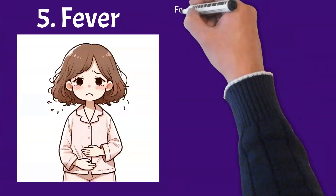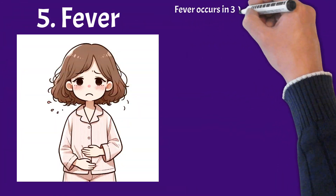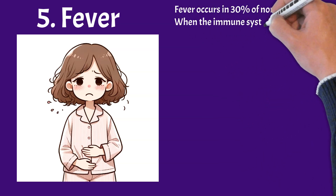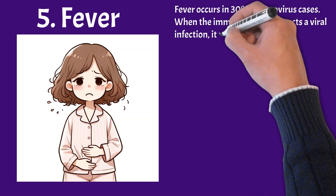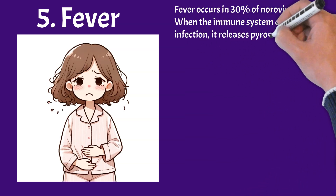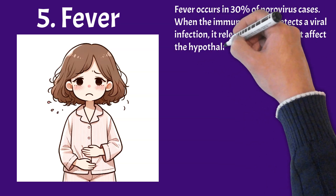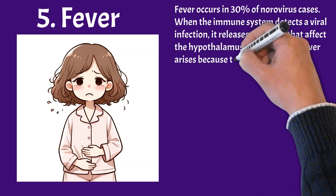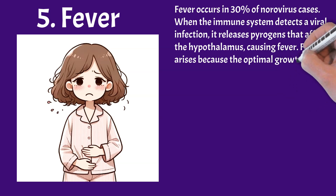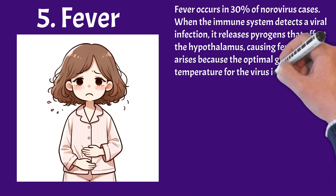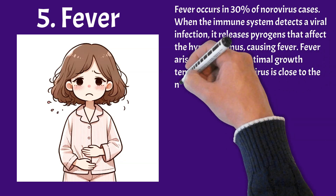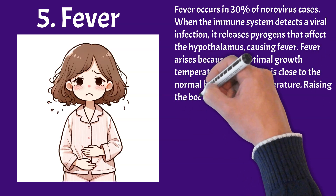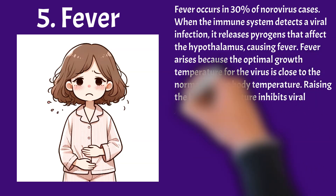Fever occurs in 30% of norovirus cases. When the immune system detects a viral infection, it releases pyrogens that affect the hypothalamus, causing fever. Fever arises because the optimal growth temperature for the virus is close to the normal human body temperature, and raising the body temperature inhibits viral growth.